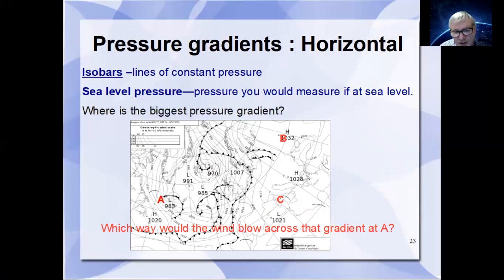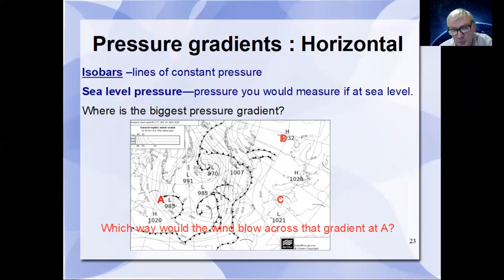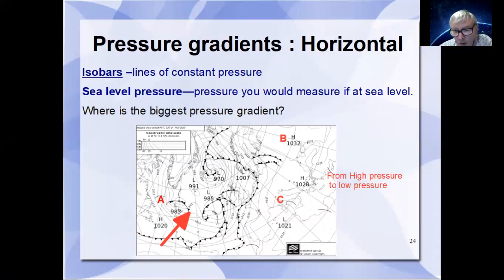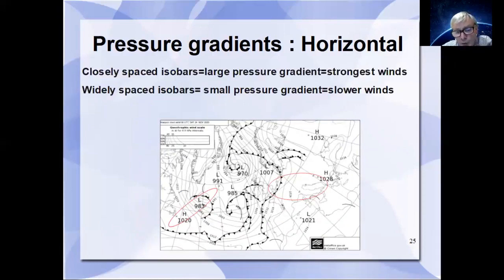Looking at area A, given that air flows from high to low pressure to balance itself out, we would expect the air to flow from the high pressure to the low pressure — very roughly in a southwesterly direction on that chart. When isobars are close together, we can expect the strongest winds, and where they are spaced out more widely, we can expect lighter or slower winds.